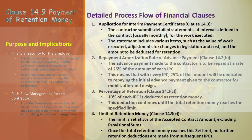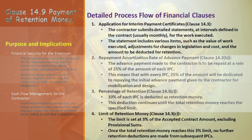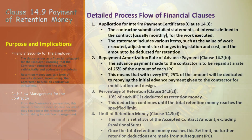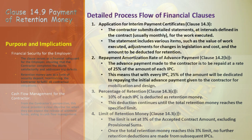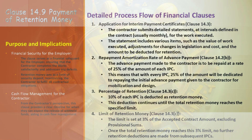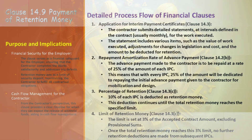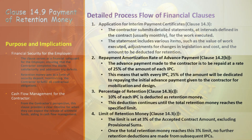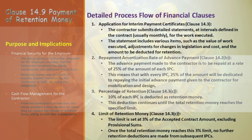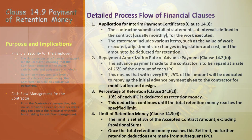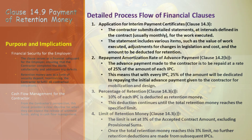Detailed process flow of financial clauses. Clause 14.3 — Application for Interim Payment Certificates: the contractor is tasked with submitting detailed statements at regular intervals, usually monthly, reflecting the work executed. These statements encompass the value of work done, adjustments due to legislative and cost changes, and the deduction for retention, ensuring the contractor receives timely compensation and maintaining healthy cash flow.